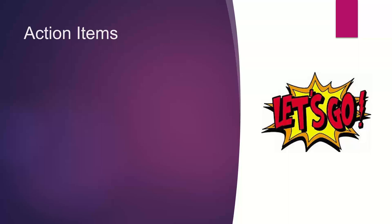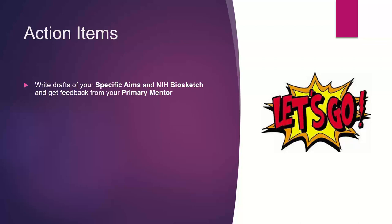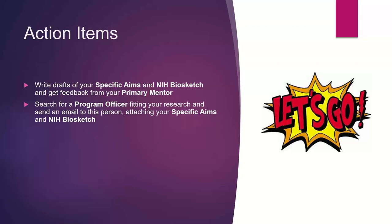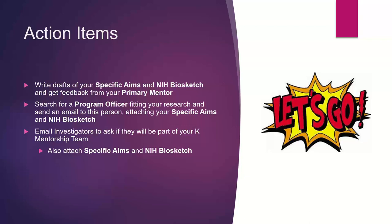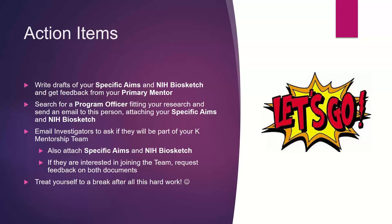In terms of action items for this week: write drafts of your aims and biosketch and get feedback from your primary mentor. Search for a program officer fitting your research and send an email attaching your aims and biosketch. Email investigators to ask if they will be part of your K mentorship team after confirming with your primary mentor that these people make sense to ask — also attach your aims and biosketch to those emails, and if they're interested in joining the team, request feedback on both documents in reply. Treat yourself to a break after all of this hard work — you're doing great.